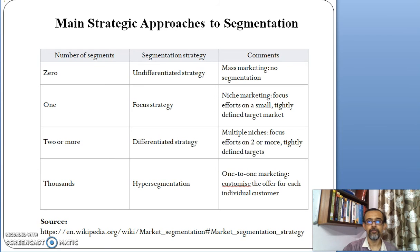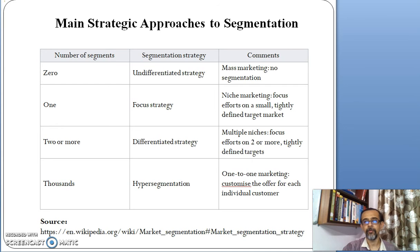If the number of segments is one, then the segmentation strategy is focused, meaning niche marketing — the focus efforts on a small and tightly defined market. For example, there is a particular group of people whom the only focus is on, say small babies.